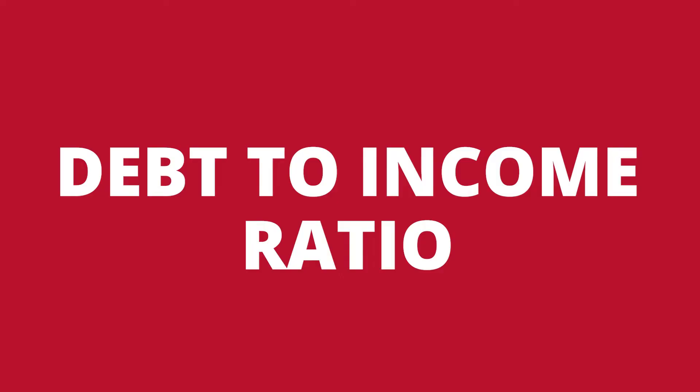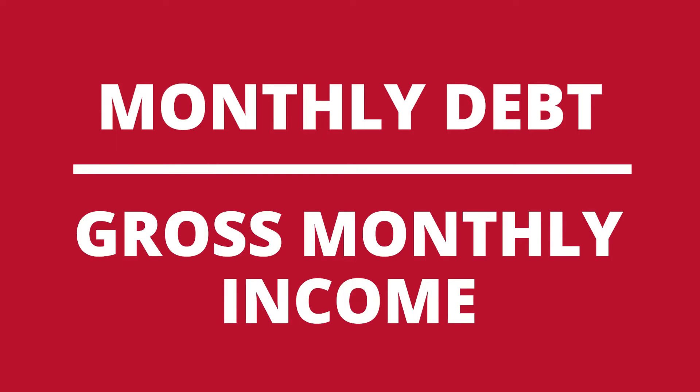When a lender calculates how much you can afford for a monthly payment, they use a ratio called a debt-to-income ratio. This ratio is one of the biggest contributors into how much you can afford, and it is your monthly debt divided by your gross monthly income.